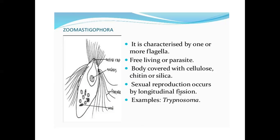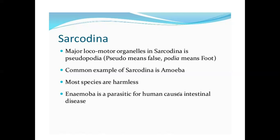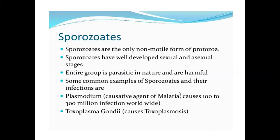Mastigophora is characterized by one or more flagella, free-living or parasitic, body covered with cellulose, chitin, or silica. Sexual reproduction occurs by longitudinal fission. Example: Trichomonas. Sarcodina: the major locomotory organelle in Sarcodina is pseudopodia — 'pseudo' means false, 'podia' means foot. The common example of Sarcodina is amoeba. Most species are harmless.